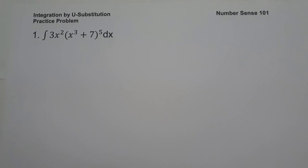On the first example, what is the anti-derivative of 3x squared multiplied by the quantity x cubed plus 7 raised to 5, dx?